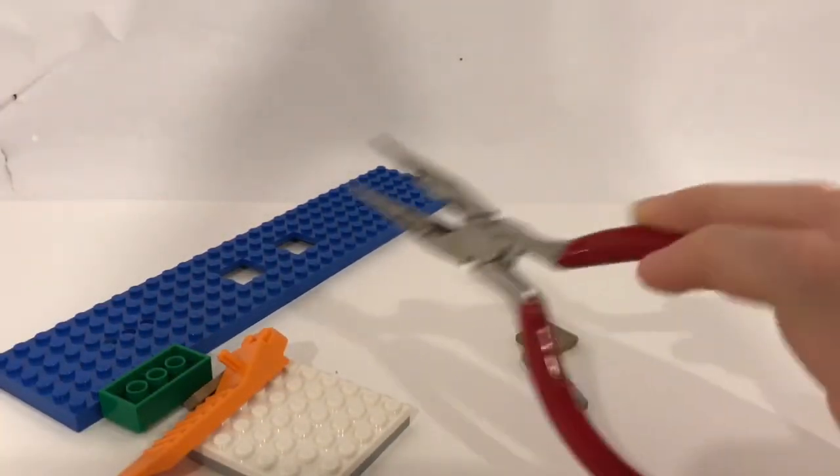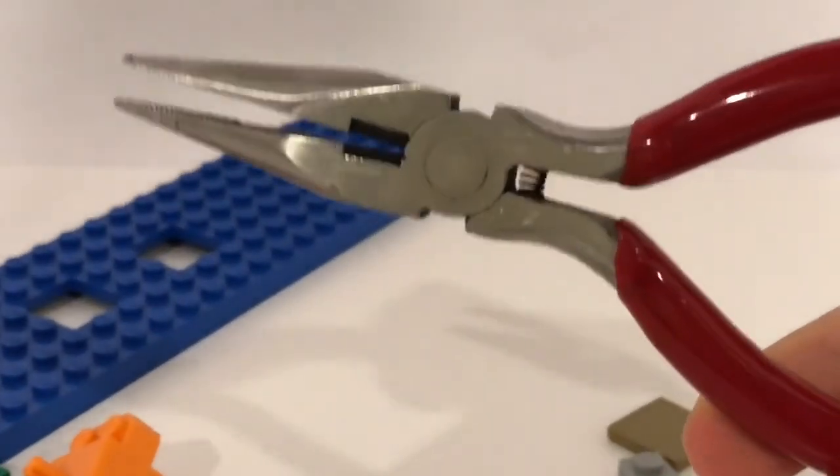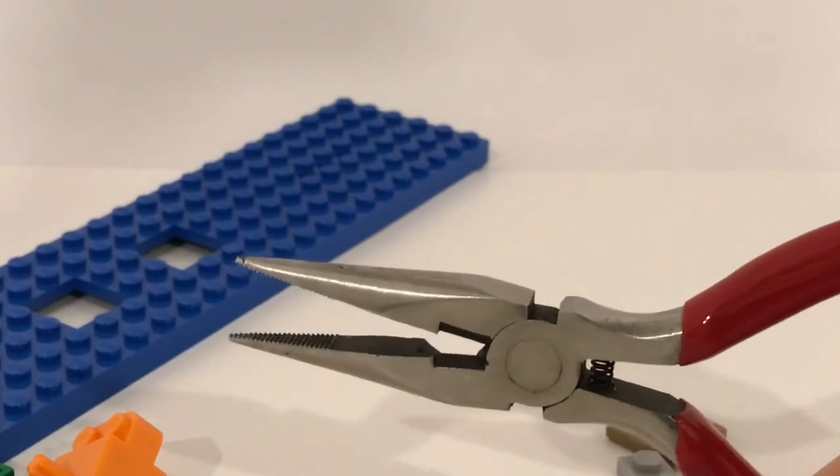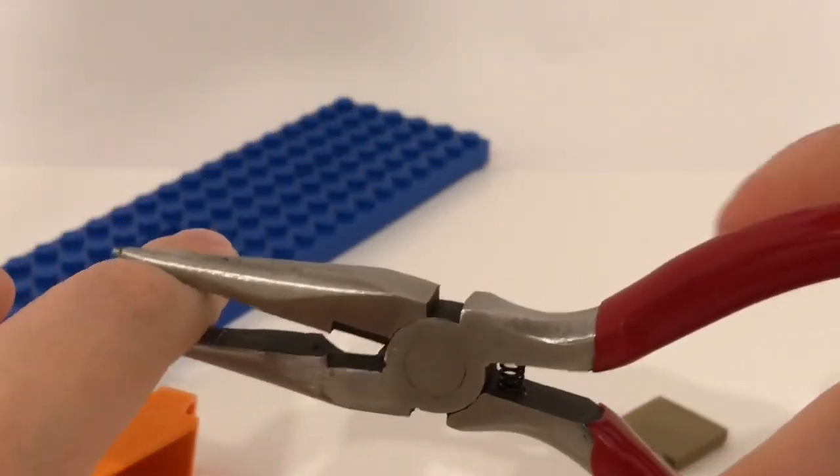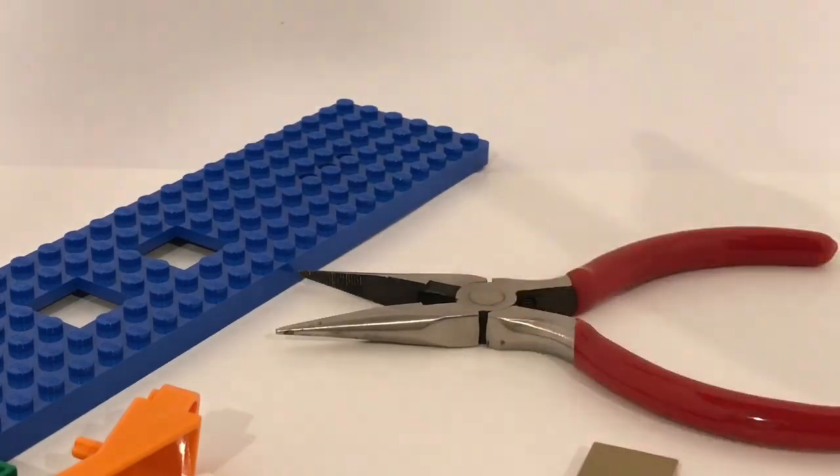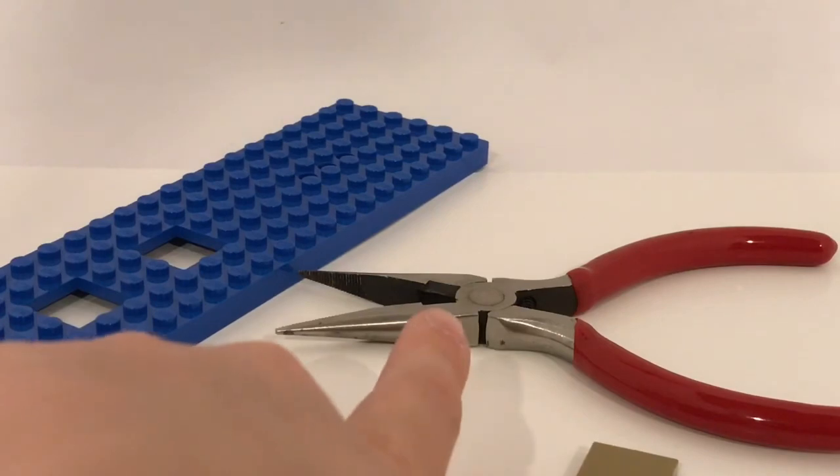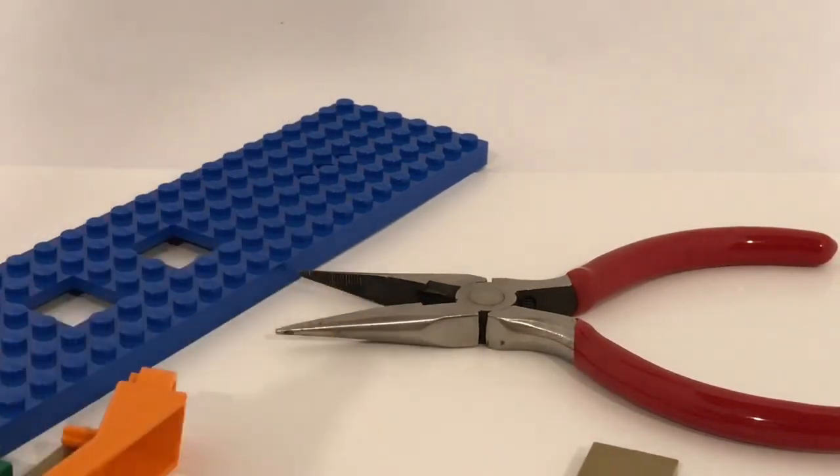So just showing you, the needle nose pliers are really good at separating bricks. But one thing is you don't want to get your fingers caught in there or get this in the eye or something, so you need to be responsible. And if there's a really hard piece you need to get off, always trust the needle nose pliers. Every Lego piece it's faced with me, it's gotten off. So if you have a piece that's been stuck for five years, then get it off with the needle nose pliers.